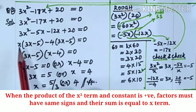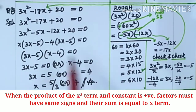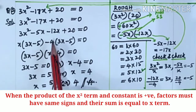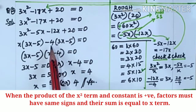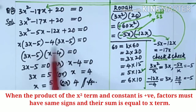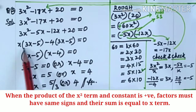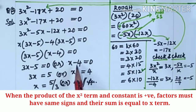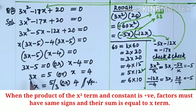x is common: 3x² ÷ x is 3x, minus 5x ÷ x is minus 5. Minus 4 is common: minus 12x ÷ (-4) is 3x, and 20 ÷ (-4) is minus 5. Equal to 0. These two must be same — yes. So (3x - 5)(x - 4) = 0. Either 3x - 5 = 0 or x - 4 = 0. x = 5/3 or x = 4. Answer.